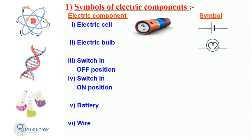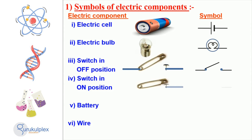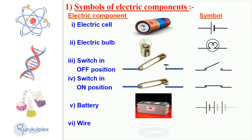Electric components have various symbols used to denote them. An electric cell is symbolized by two parallel lines with an arrow pointing away from one another. An electric bulb is symbolized by a circle or a lightning bolt. A switch in the off position is symbolized by two parallel lines crossing each other, while in the on position the same symbol includes an arrow pointing at one of the lines. A battery is symbolized by two parallel lines with an arrow pointing toward one another, and a wire is symbolized by a line with arrows on either side.